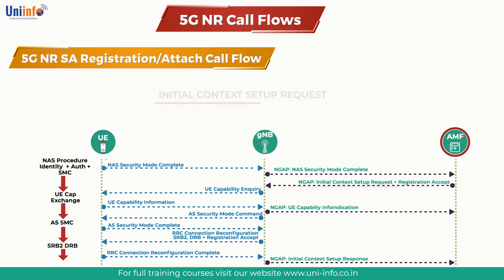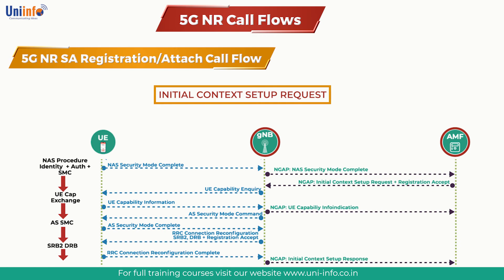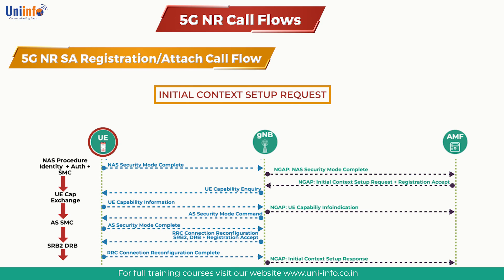Next is the Initial Context Setup Request. The AMF allocates an AMF UE NGAP ID. The gNodeB will use this ID to address the UE context on the AMF. The AMF sends an Initial Context Setup Request message to the gNodeB to start the Initial Context Establishment process. The message typically contains the Registration Accept NAS message, one or more PDU session setup requests, the AMF UE NGAP ID, UE Aggregate Maximum Bit Rate, UE Security Capabilities, and Security Key.